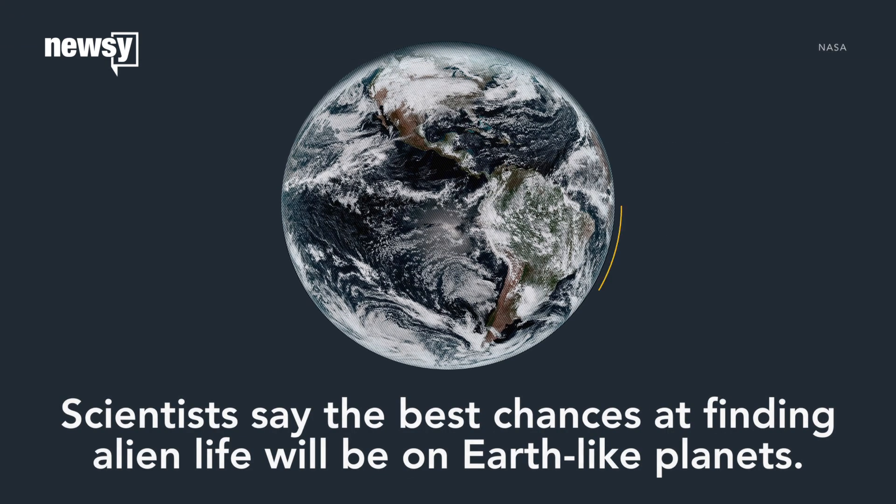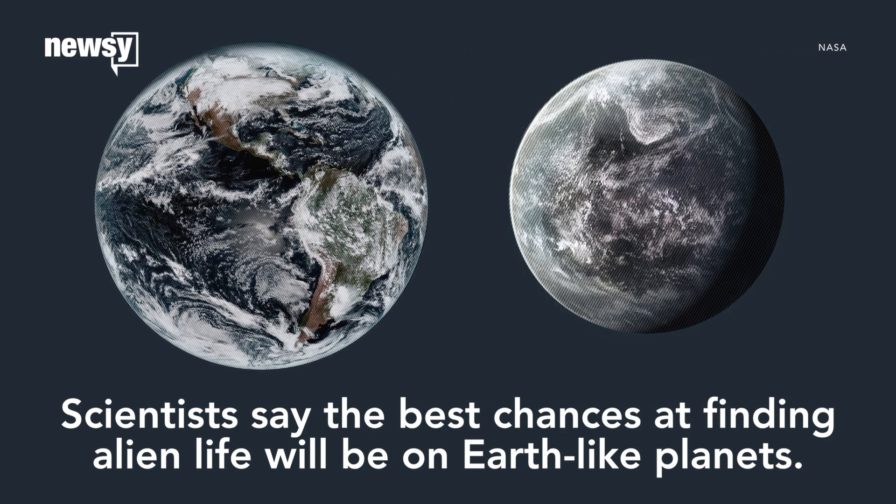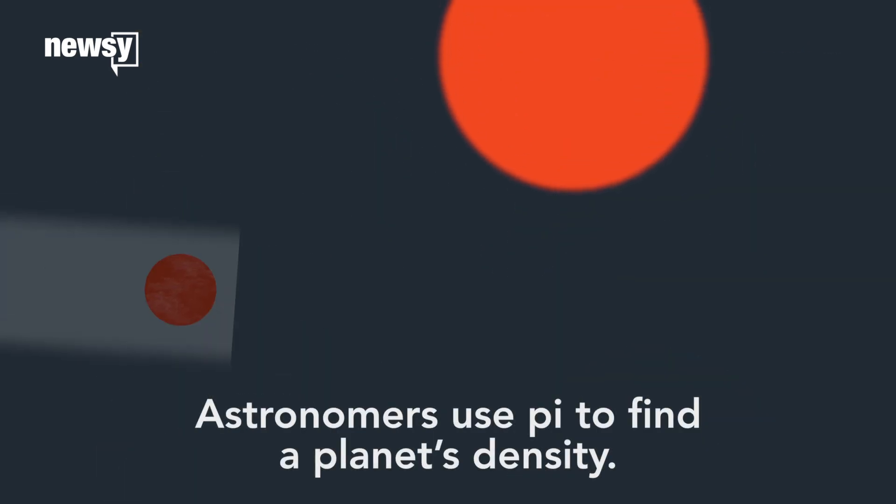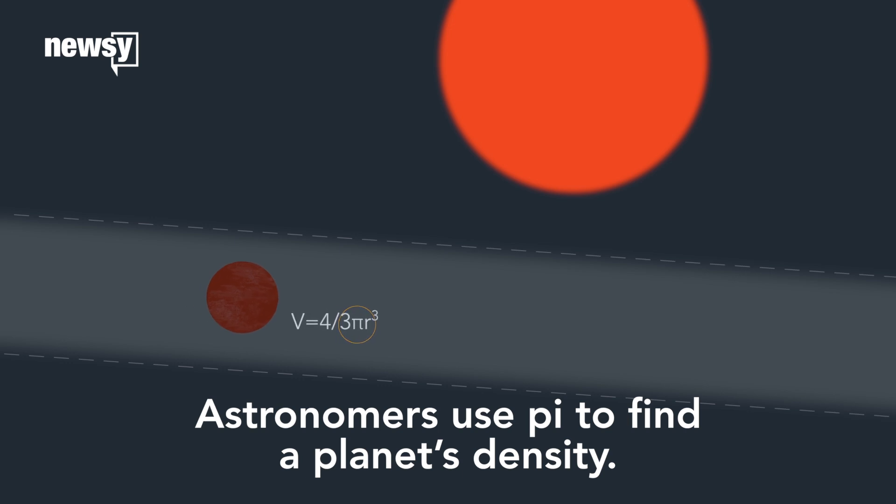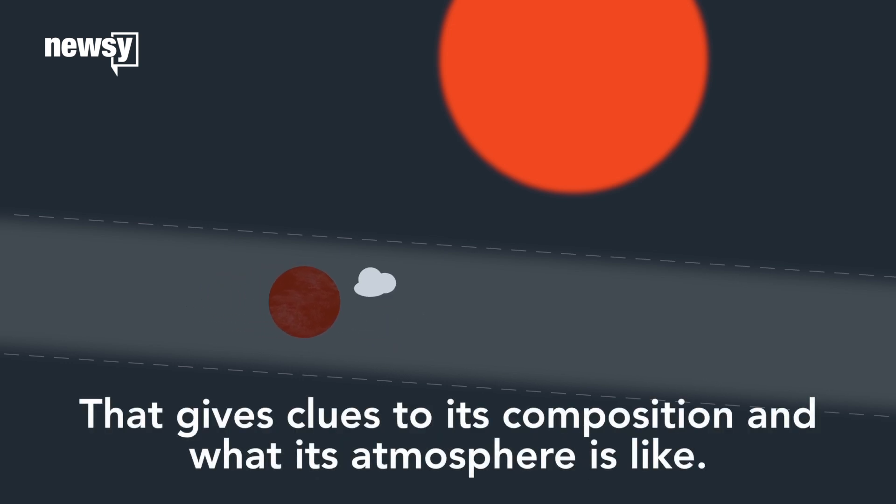Scientists say the best chances at finding alien life will come from locating planets similar in size and composition to Earth. Astronomers use pi to find a planet's density, which helps determine if it's gaseous, like Jupiter, or rocky, like Earth — and what its atmosphere is like.